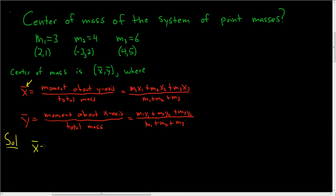So the x-coordinate, it's going to be m1 times x1. So it's going to be 3 times 2, plus, and then you do 4 times negative 3, and then plus, then you do 6 times 4.